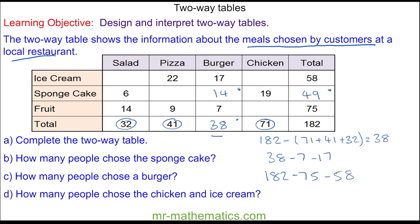I can now work out the people who had a pizza and a sponge cake, which is 49 take away the other three values, and this is 10.